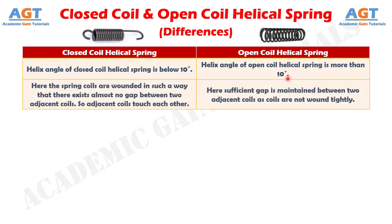Number 2: In a closed coil helical spring, the spring coils are wound in such a way that there exists almost no gap between two adjacent coils, so adjacent coils touch each other. Whereas in an open coil helical spring, sufficient gap is maintained between two adjacent coils as coils are not wound tightly.